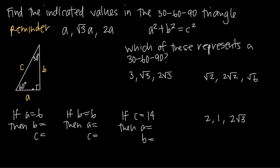The reason that this kind of triangle is special is because it's exactly one half of an equilateral triangle — meaning a triangle that has three sides of the same length. So if we drew in the other half of the equilateral triangle, it would look something like this.